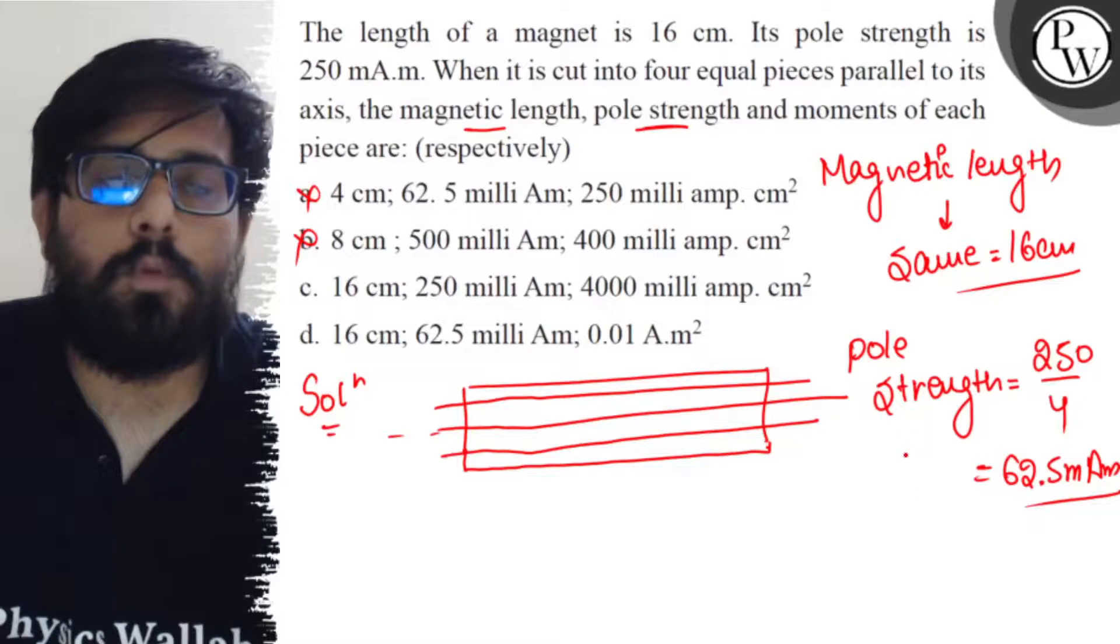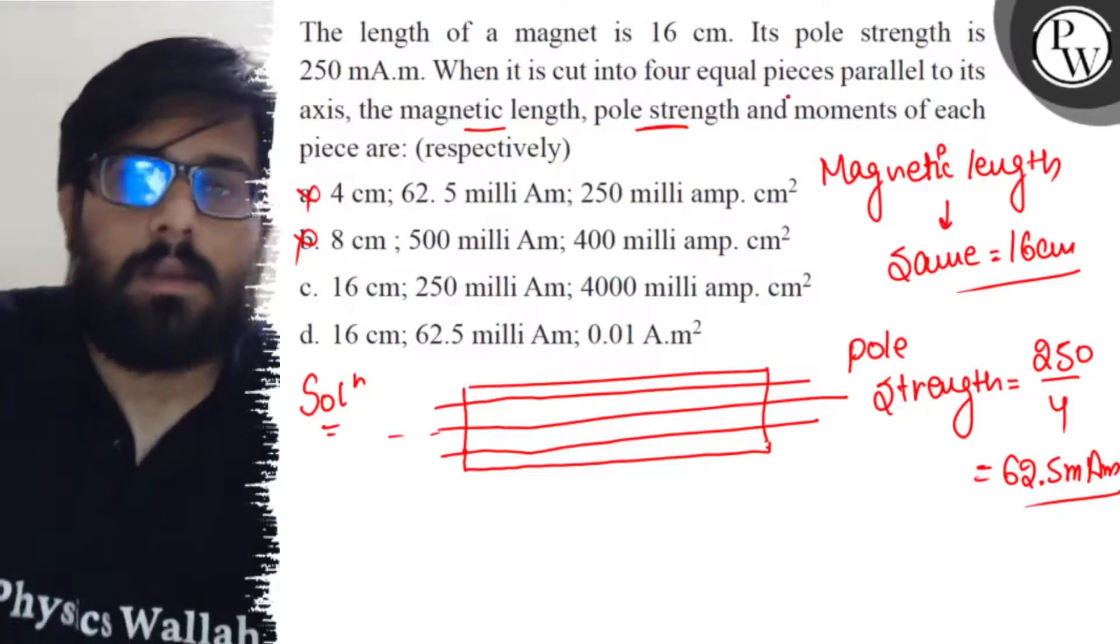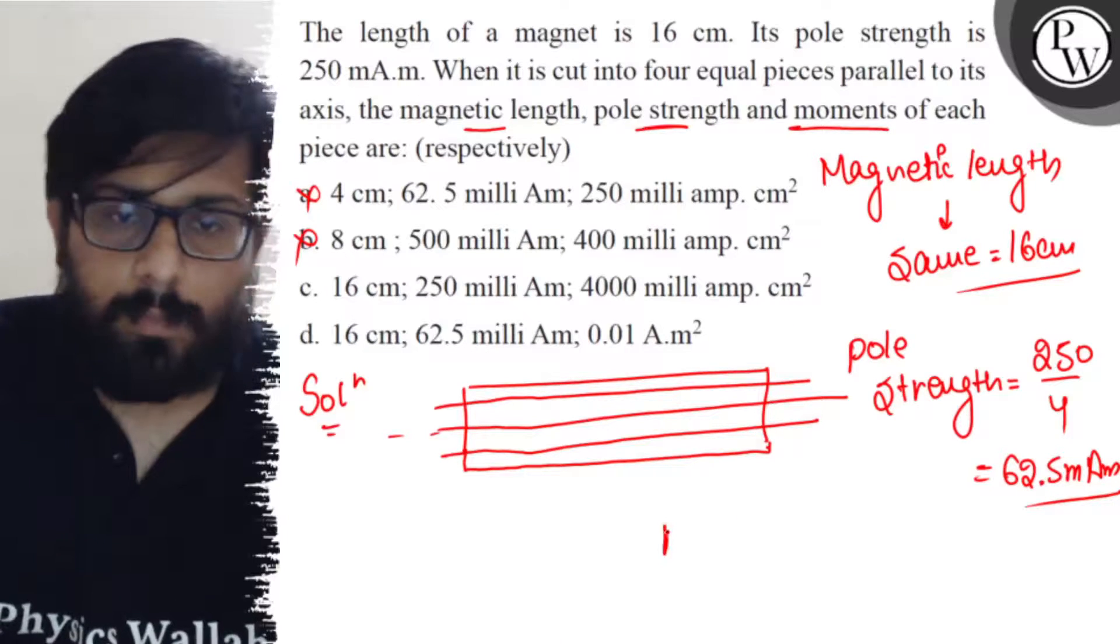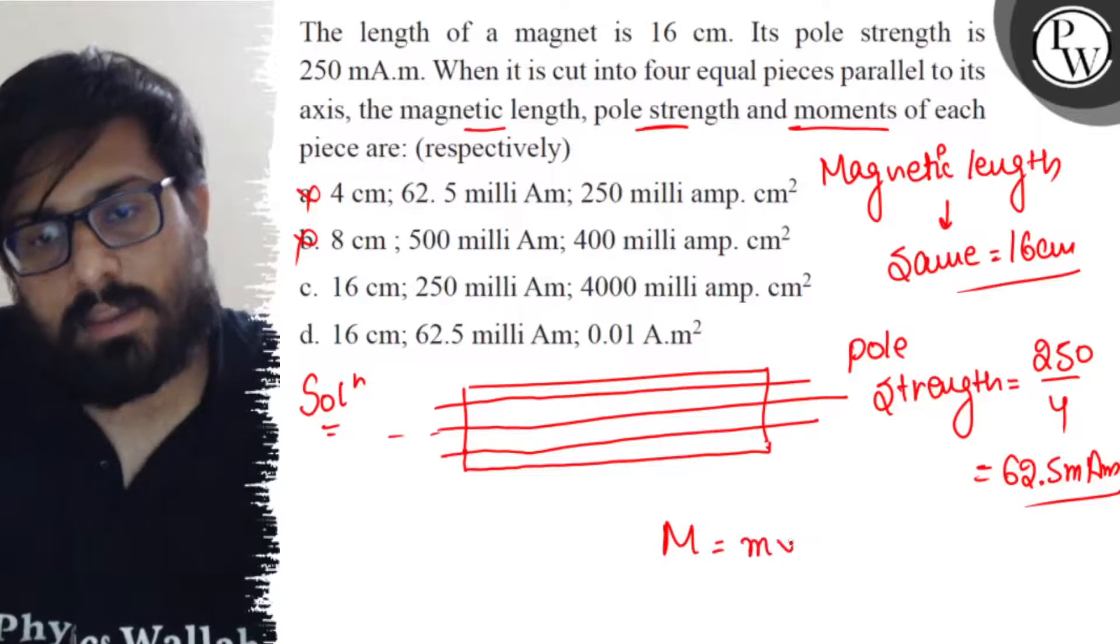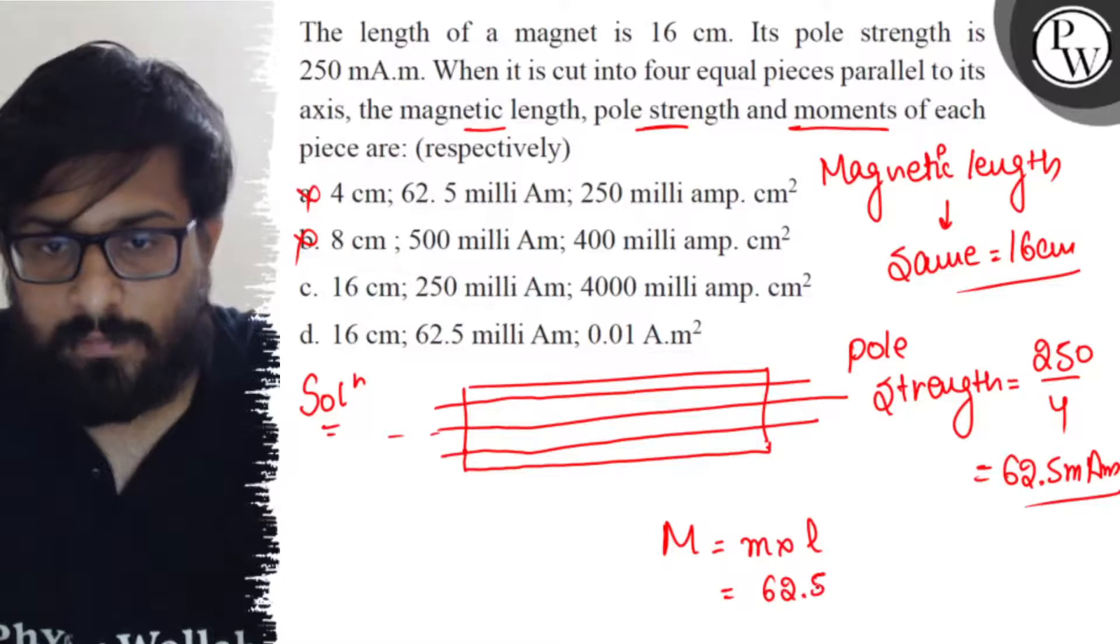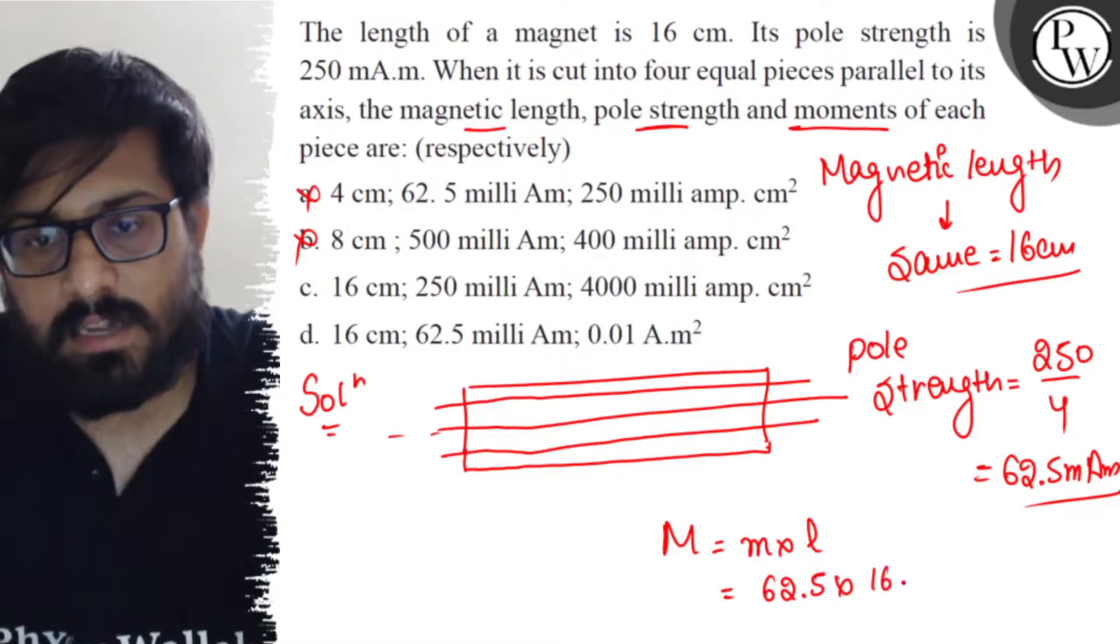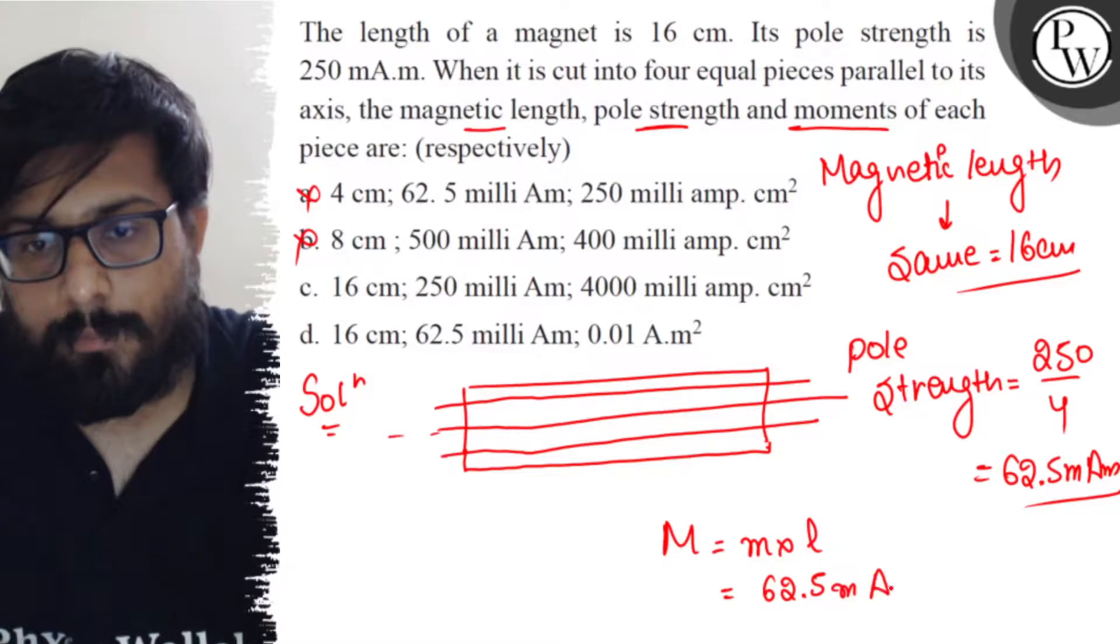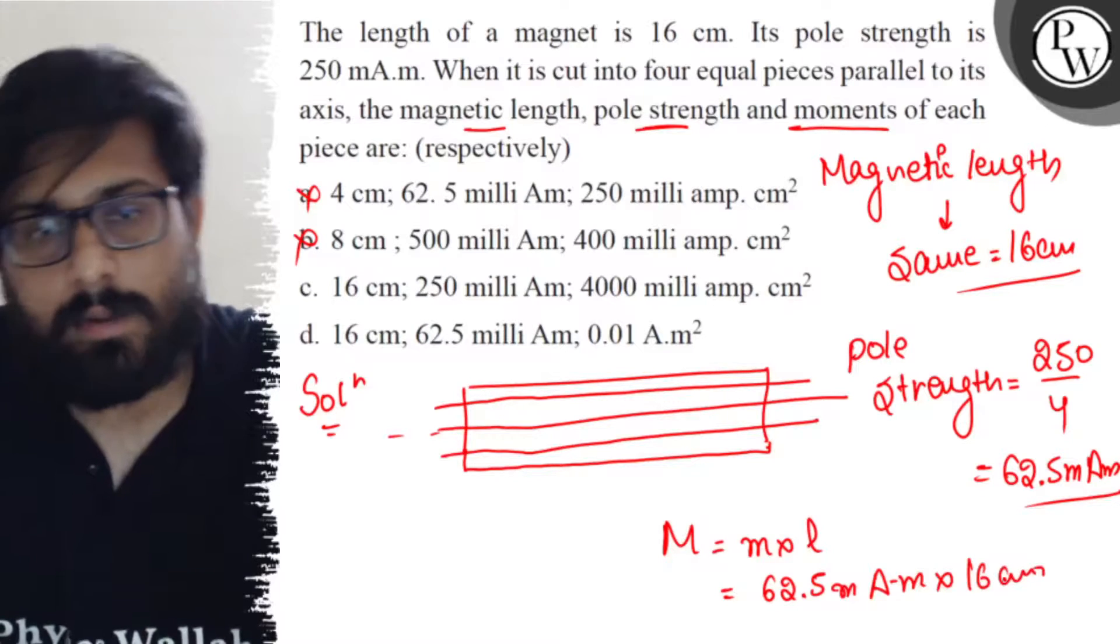divided by 4, which comes out to be 62.5 mA·m. The length remains 16 centimeters. So magnetic moment equals 62.5 mA·m times 16 centimeters,